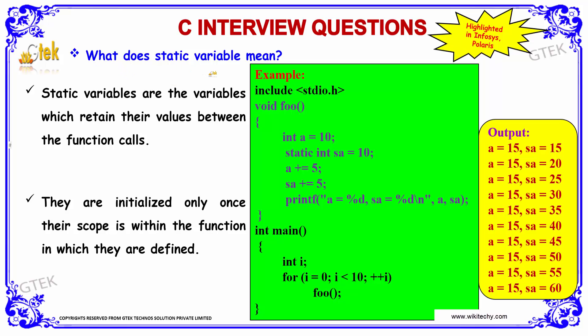What does static variable mean? Static variables are the variables which retain their values between the function calls. They are initialized only once. Their scope is within the function in which they are defined.